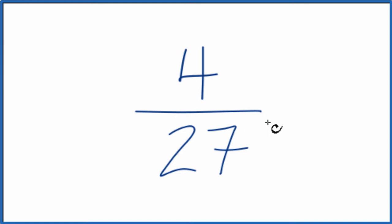When we do that, we need to find a factor that goes into 4 and 27 evenly. We want to find the greatest common factor. So let's list the factors of 4 and 27.